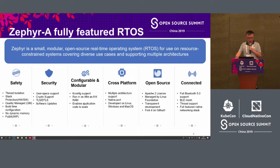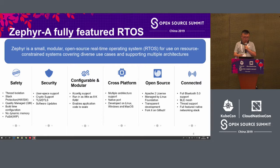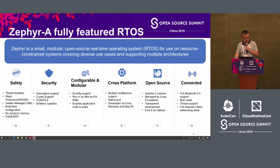For Zephyr, yesterday Kate shared many features — I won't repeat that. I want to highlight several key features. For safety, we adopt a thread isolation method. We also have stack protection, quality management, build-time configuration, and no dynamic memory allocation for the safety part. Because in Chinese, safety and security are the same word, but in English they are two different words.